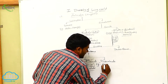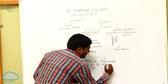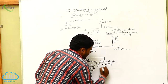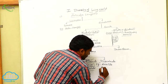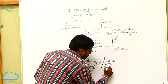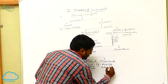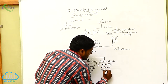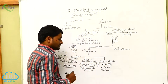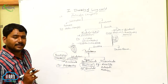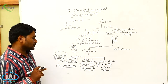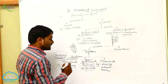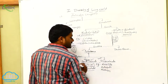Examples: Annelida, Arthropoda, Mollusca. So these are the three phyla — Annelida phylum, Arthropoda phylum, and Mollusca phylum — are examples for the Schizocoelomata.